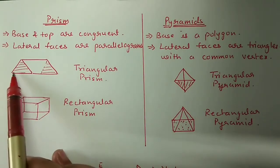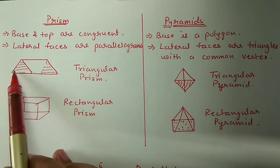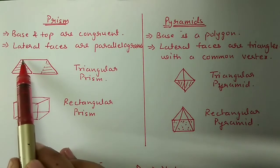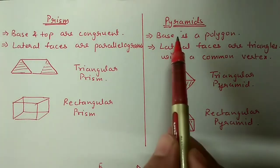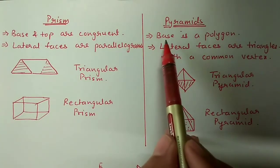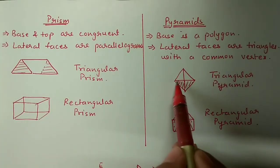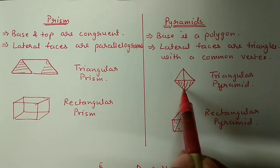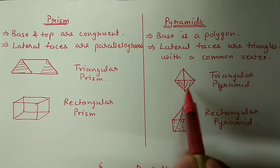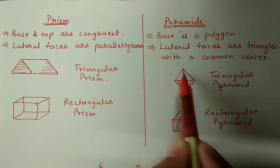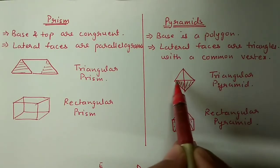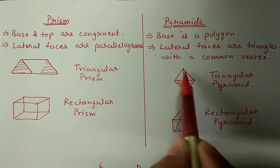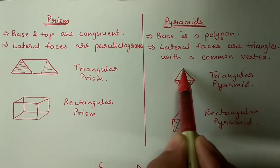One face will be here, one face will be from this side to this side and one face will be the back side. But in a pyramid, the base is a polygon but all the faces will be in triangular shape and these faces will meet at a point - only base, top is not there.